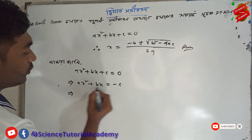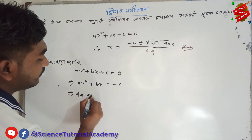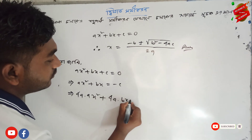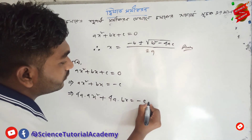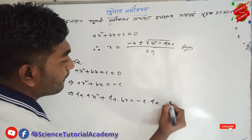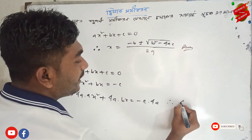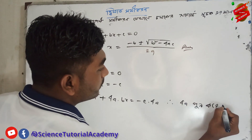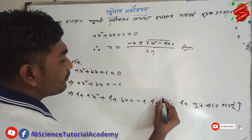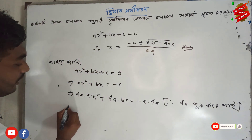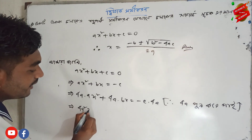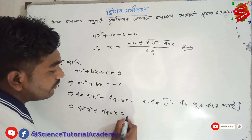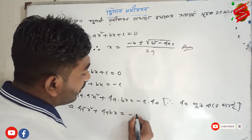We should draw 4a. We should also draw 4a. Okay? Now let's write: 4a squared x squared plus 4abx equal to minus 4ac.